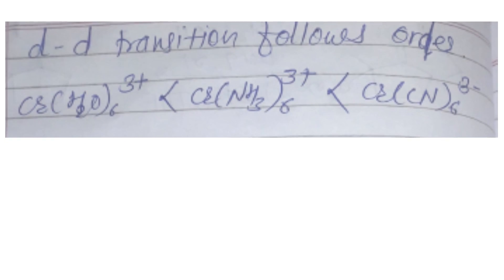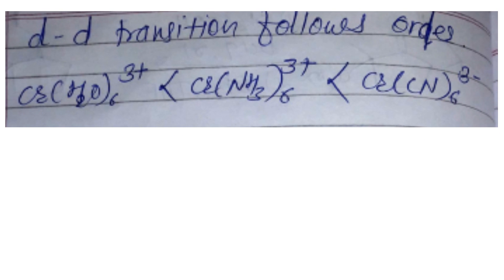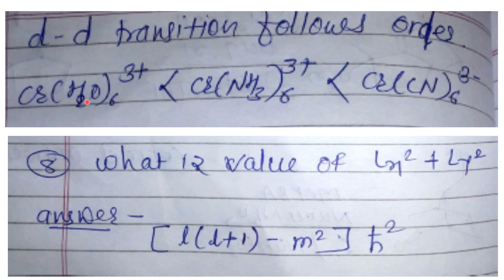For the dd transition, the spectrochemical series follows this order: cyanide is stronger than amine, which is stronger than water. The next question asks for the value of Lx² + Ly². The correct answer is ℏ²[l(l+1) − m²], which is the correct value for Lx² + Ly².